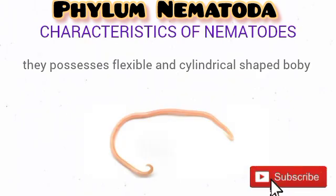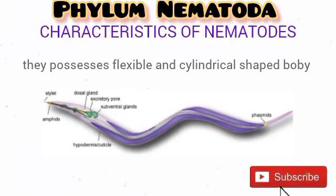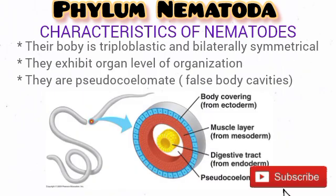Let's talk about the characteristics of nematodes. As you can see from the diagram, they possess a flexible body and are cylindrical in shape. Majority of them are actually less than 5 centimeters long; however, some are microscopic while others can be as long as 1 meter, especially the parasitic nematodes. Nematodes are triploblastic.